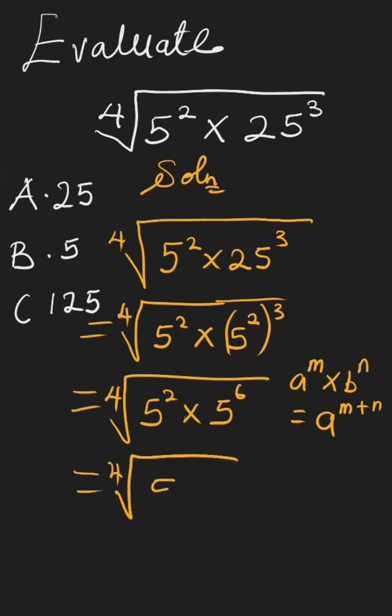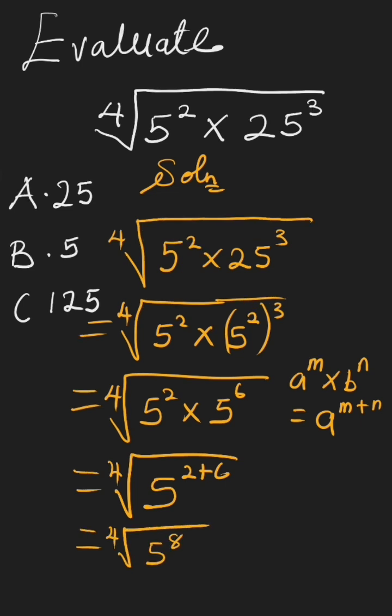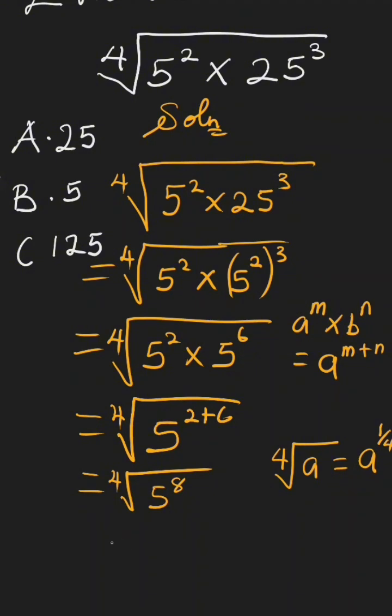This will be fourth root of 5 raised to the power of 8. Another law of indices states that the fourth root of a is the same as a raised to the power of 1 over 4. Applying this, we get 5 raised to the power of 8, raised to the power of 1 over 4.